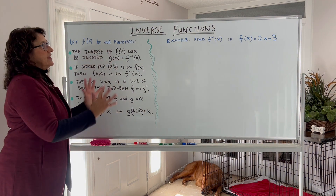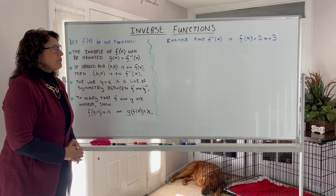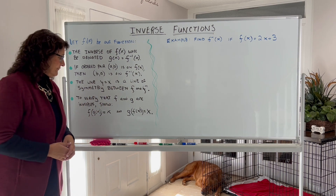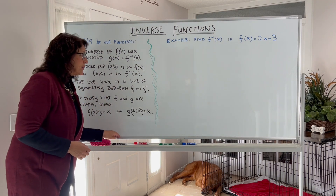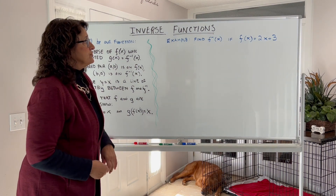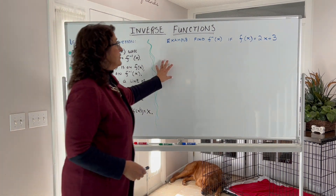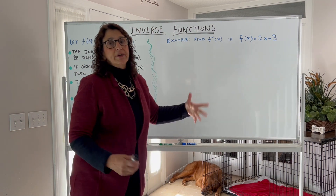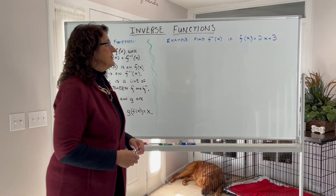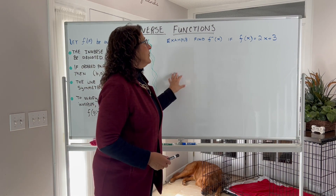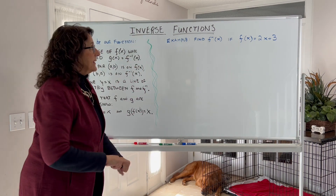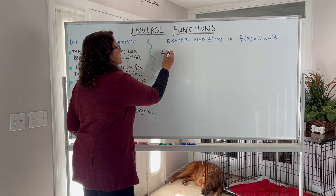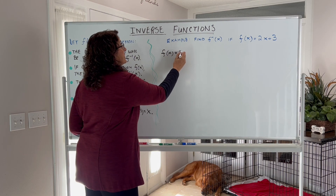You will see all this take place in this example. Let me use this example to show you how inverse functions work. We're going to take the function 2x plus 3 — it's a linear function, just the equation of a line — and we are going to find its inverse.